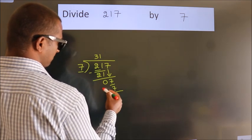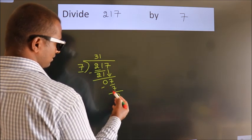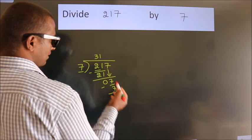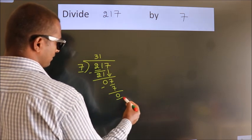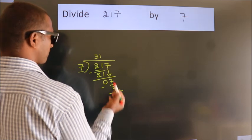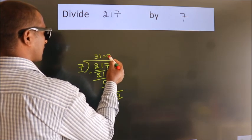Now we subtract. We get 0. After this, no more numbers to bring it down. And we got remainder 0. So this is our quotient. We get 31. Thank you.